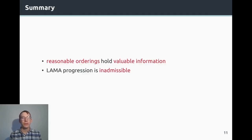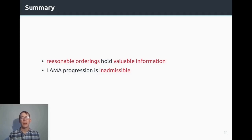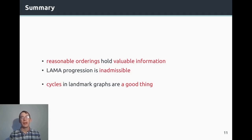What do we want you to take home from this talk? First, reasonable orderings have valuable information that we can and should use when using landmarks for heuristic search. However, the LAMA progression is inadmissible. Luckily, we have shown there is an admissible alternative — RO — which also performs well in both optimal and satisficing planning. Finally, there is a common misconception that cycles in landmark graphs are bad, but we show that is not the case. If you are interested in cycles in landmark graphs, please join our presentation at the main conference where we exploit cyclic dependencies in landmark heuristics. Thanks for your attention.